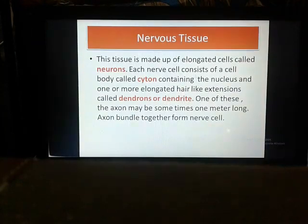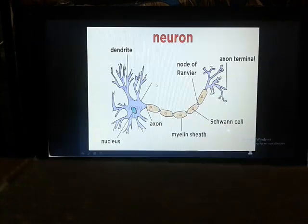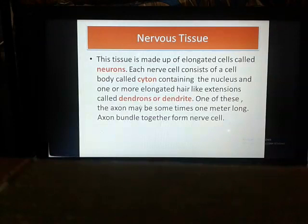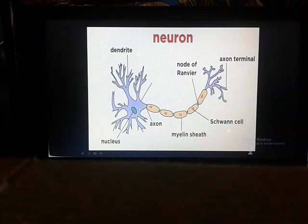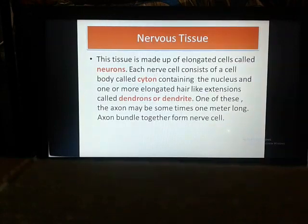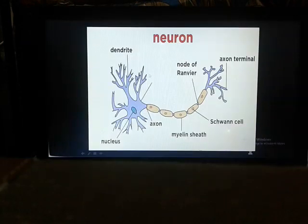Each nerve cell consists of a cell body called the cytone. This dense part is called the cytone, or cell body, containing the nucleus. This is the nucleus, and this is the cytone. Each nerve cell also consists of one or more elongated, hair-like extensions called dendrons and dendrites. This is your dendrite, this is your nucleus, and this is your cytone.